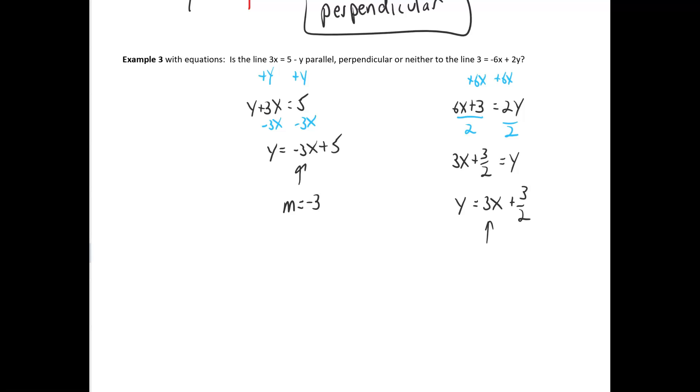Once you get your final equation in slope-intercept form, this one has a slope of negative 3. And this one has a slope of positive 3. Now, those are not the same. One's negative, the other's positive. And for sure, they're not reciprocals. And we can also tell that if we multiply negative 3 times 3, that's negative 9. That is not negative 1. So these are neither, neither parallel nor perpendicular.